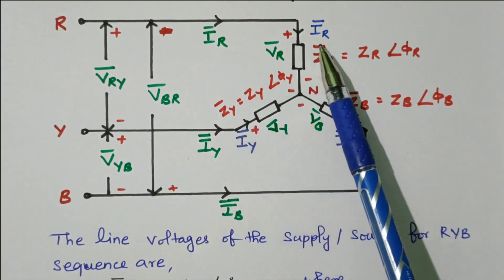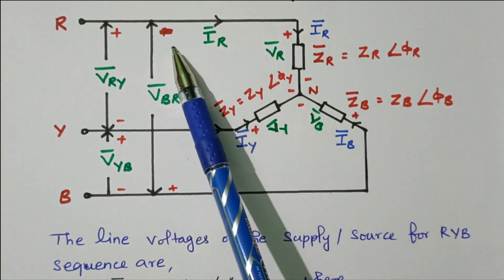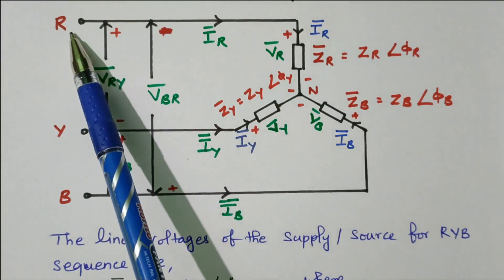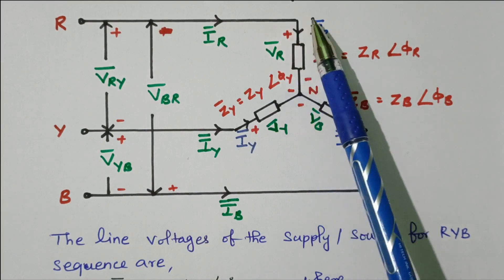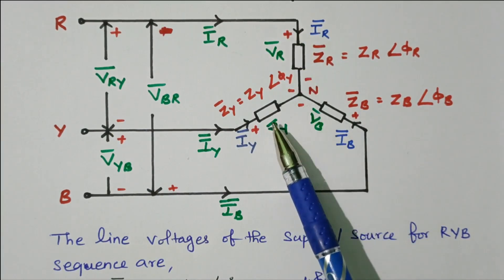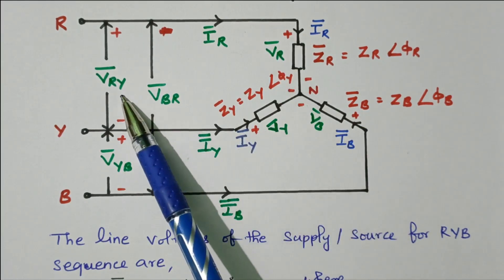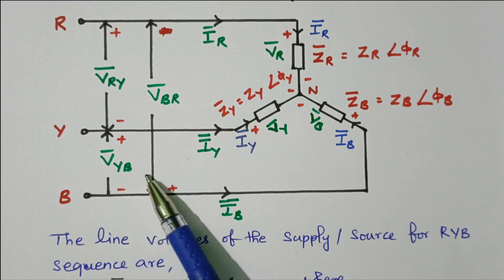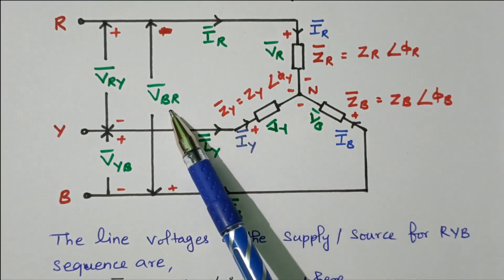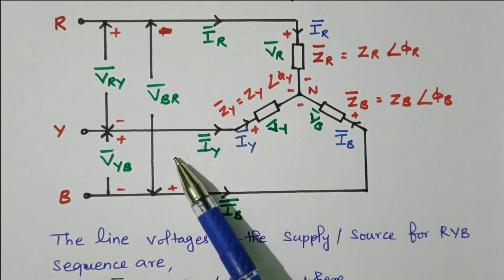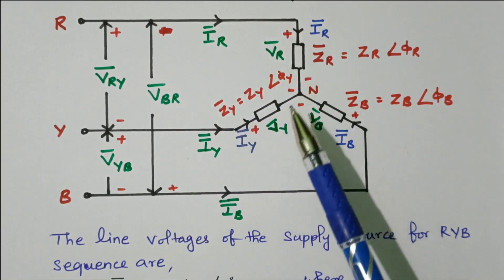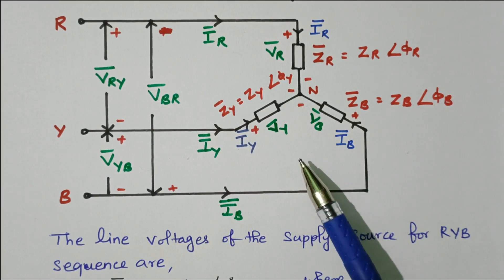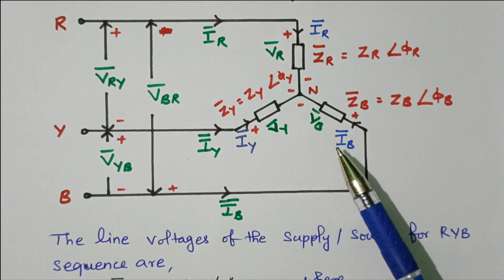The important thing is that line current and phase current are both equal in star connected systems. The current flowing from R-phase — line current IR — equals the phase current. But the voltage is different. Between R and Y we have VRY, but at the phase end two phases are available: R-phase and Y-phase. So VRY is the vector difference of R-phase and Y-phase. Similarly, VYB is the vector difference between Y-phase and B-phase, and VBR between B-phase and R-phase. In star connected, line current equals phase current, but line voltage is the vector sum of two phase voltages.